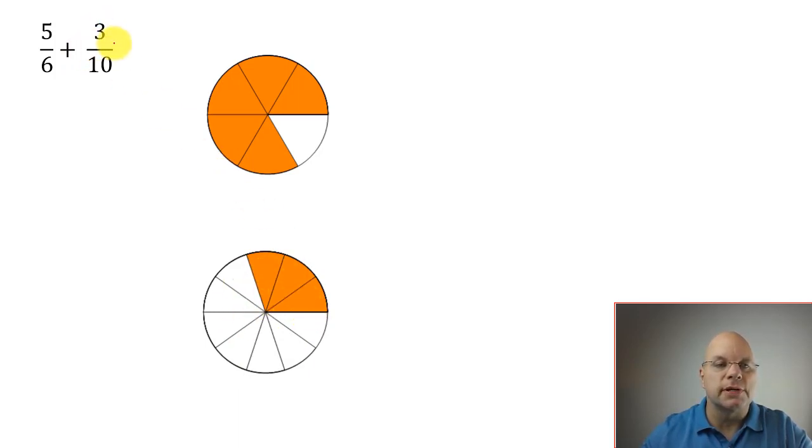So 5 sixths plus 3 tenths. The tricky thing about adding fractions is you can't add 5 sixths to 3 tenths. You don't have like terms. Here we're counting sixths and here we're counting tenths. And sixths are larger than tenths, and so you can't combine them. You need to make the pieces the same size. So we find the least common multiple of 6 and 10, or the lowest common denominator.